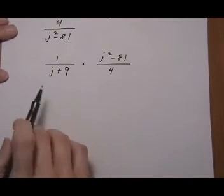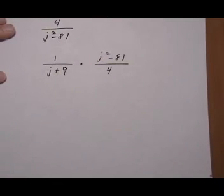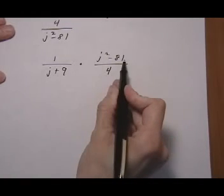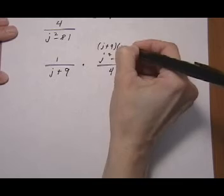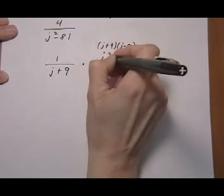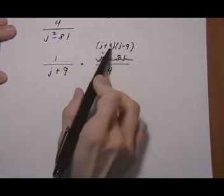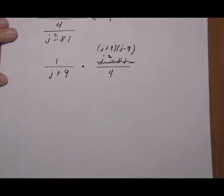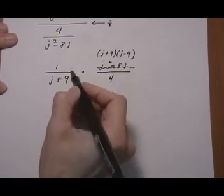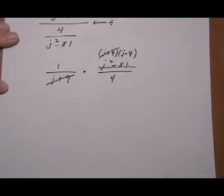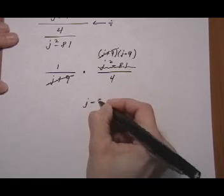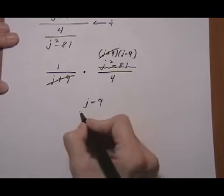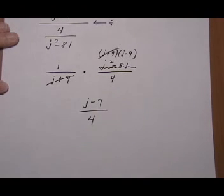We've turned this into a multiply problem, so we use the steps for multiplying fractions: factor, cancel, and multiply across. First, factor j squared minus 81 — it's two terms, both perfect squares, so we use difference of squares factoring. Then we look for pieces to cancel: we can cancel (j plus 9) on the bottom and on the top. Now we multiply across — the numerator is just j minus 9, and 4 is all we have on the denominator, so that's our answer.